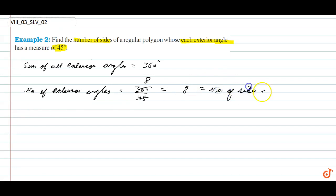sides of a polygon. So number of exterior angles is always equal to number of sides of polygon. In this case, how much is it? It is eight.